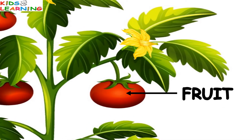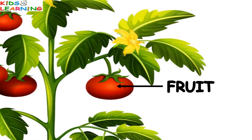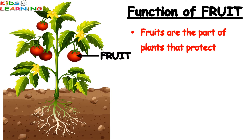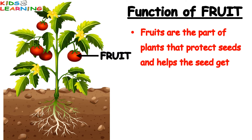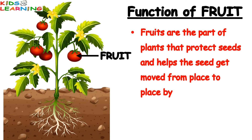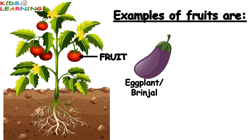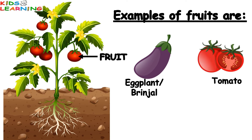Fruit. Function of Fruit: Fruits are the part of plants that protect seeds and help the seeds get moved from place to place by an animal. Examples of fruits are eggplant or brinjal, tomato, and mango.